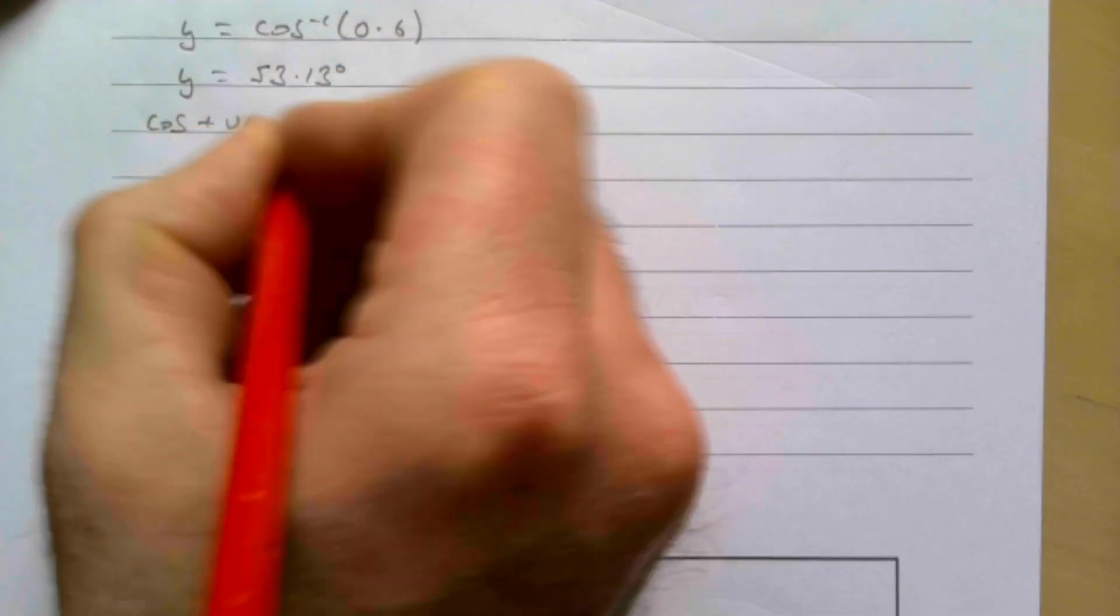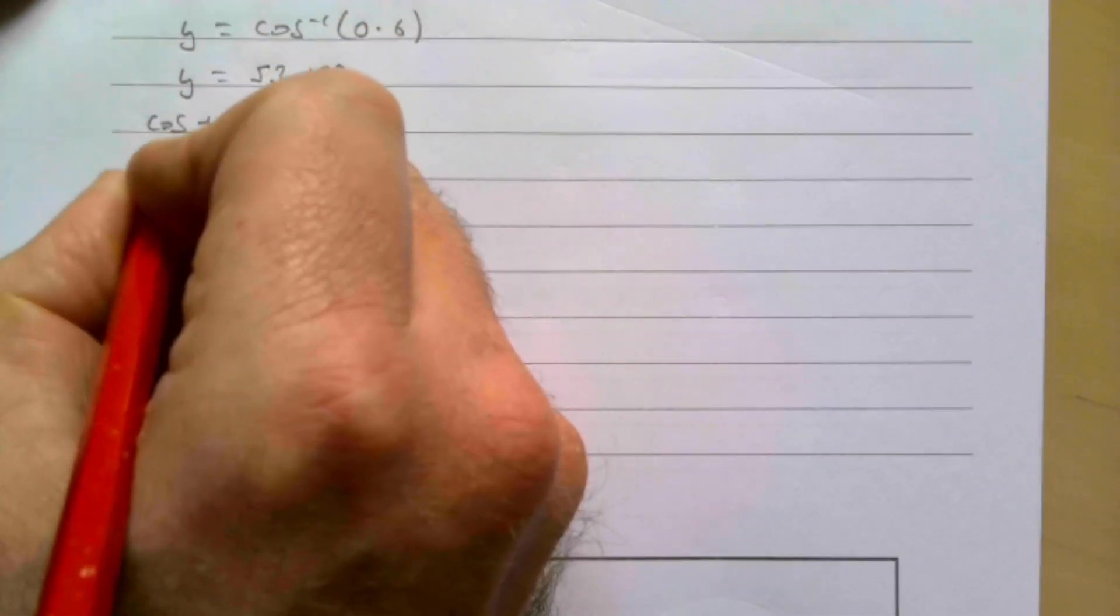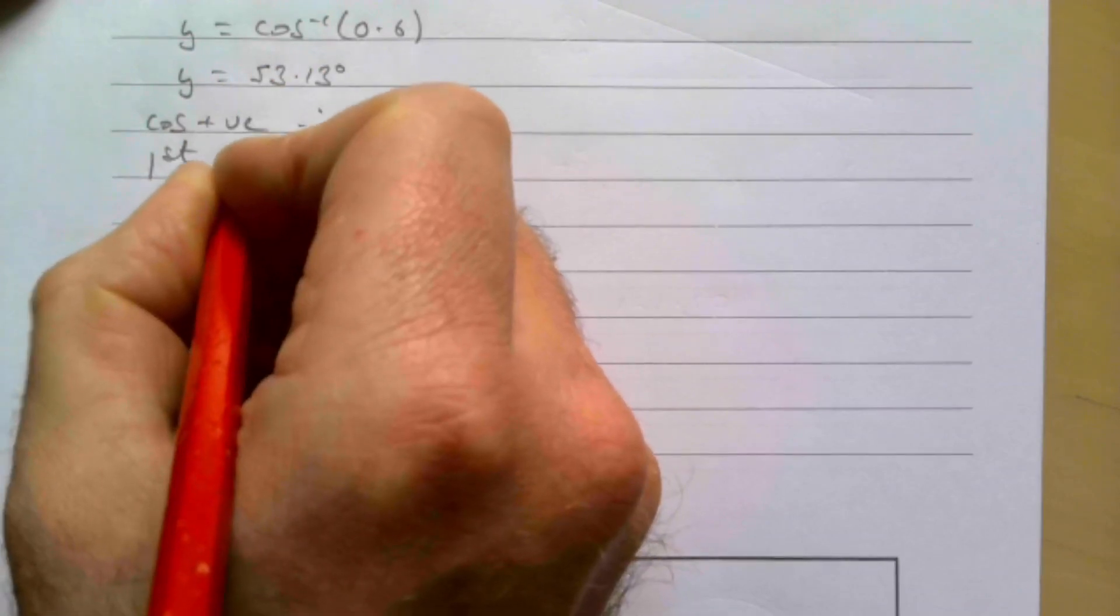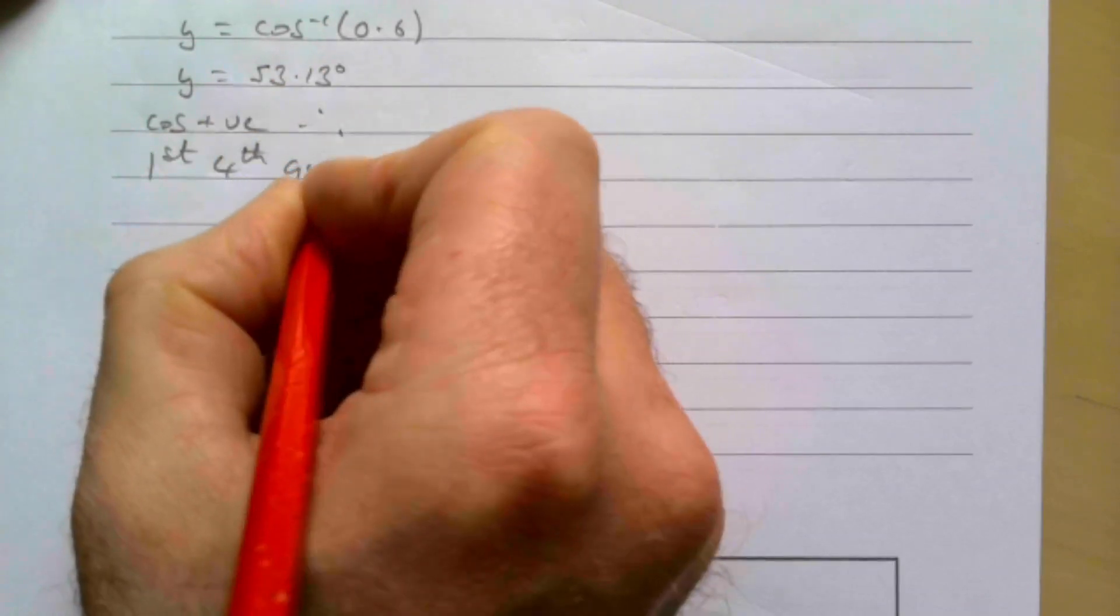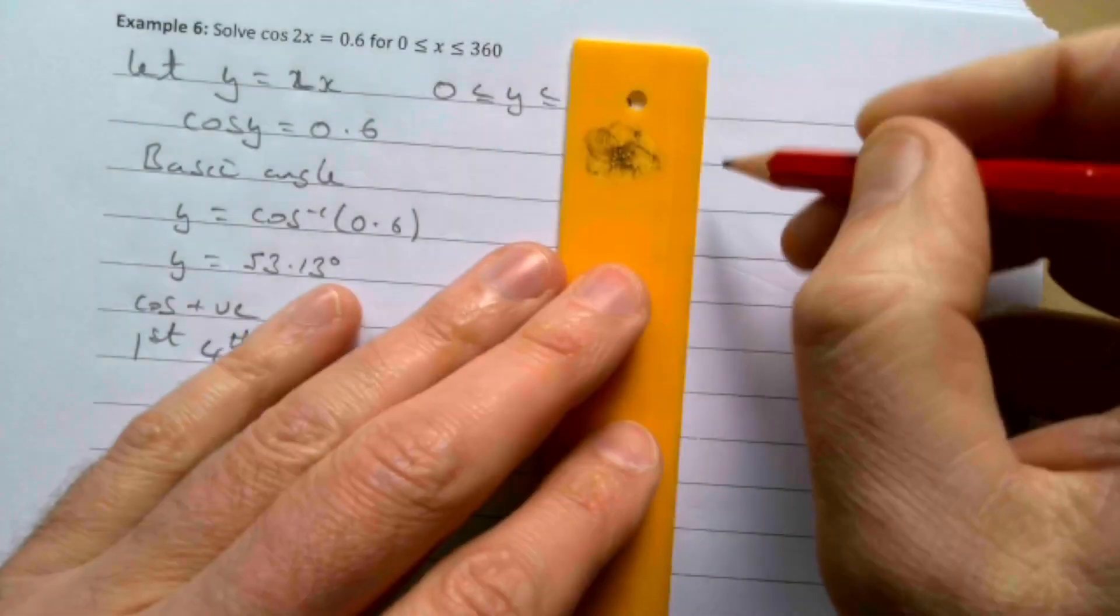We want where cos is positive, therefore we want the first and fourth quadrants. So let's draw our diagram here and see what we're going to have.